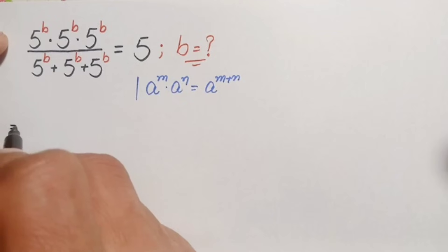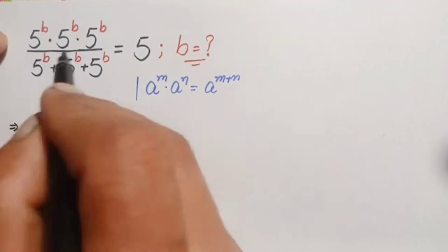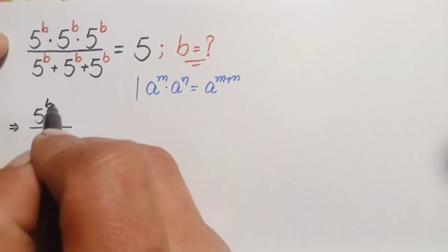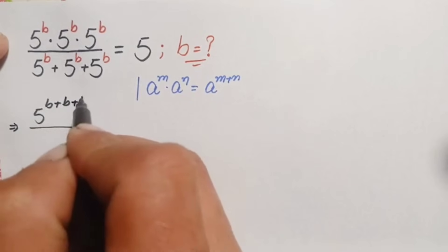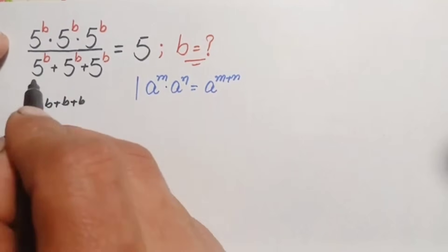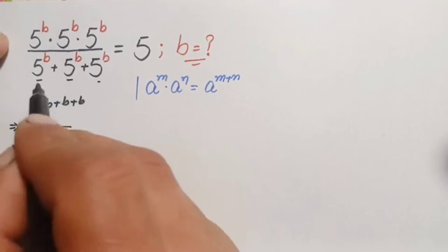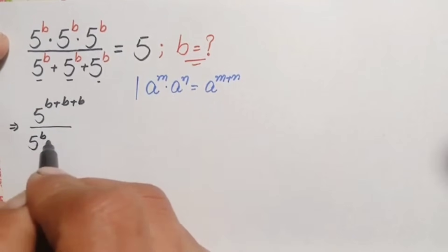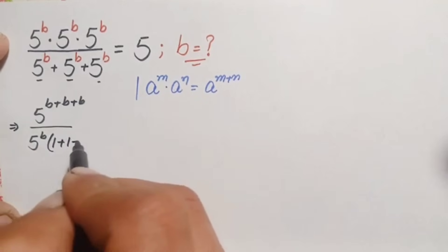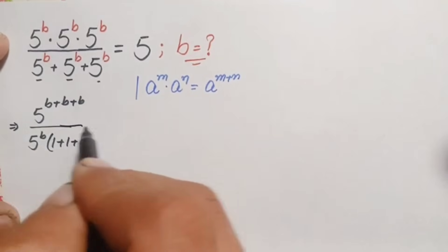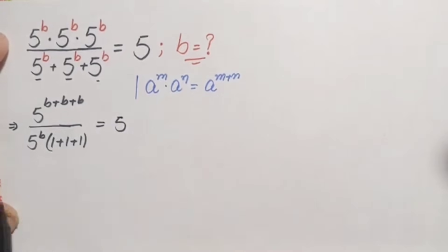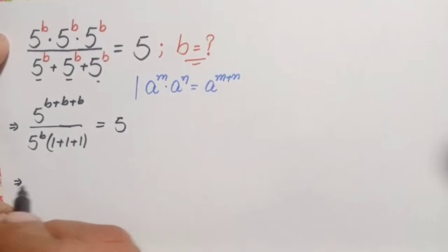Using this exponential identity, the numerator will become: we write the base one time as 5, and add the powers, so this will become b plus b plus b. In the denominator, 5 raised to power b is common, so we take it out. All remaining places will have 1, so this becomes 1 plus 1 plus 1, which equals 5 raised to power b times 3.